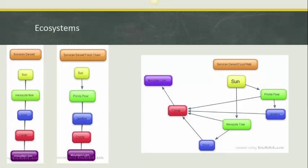And then the mesquite tree is eaten by the dove, so we'll make a line from the mesquite tree to the dove. And then the prickly pear will make a line to the javelina.